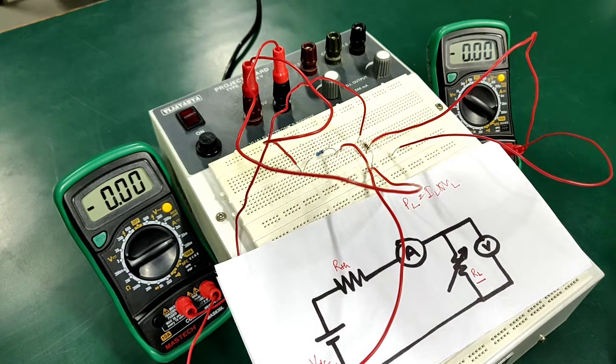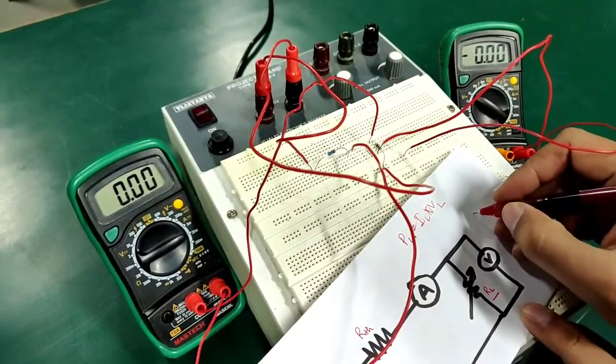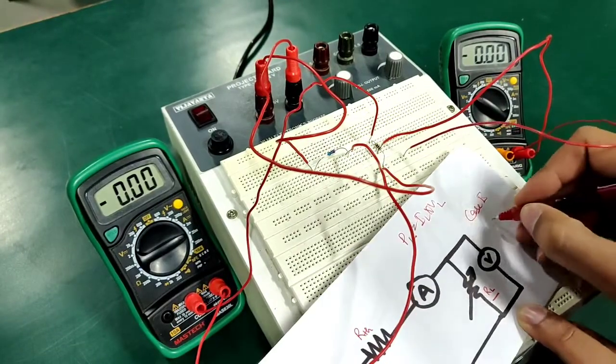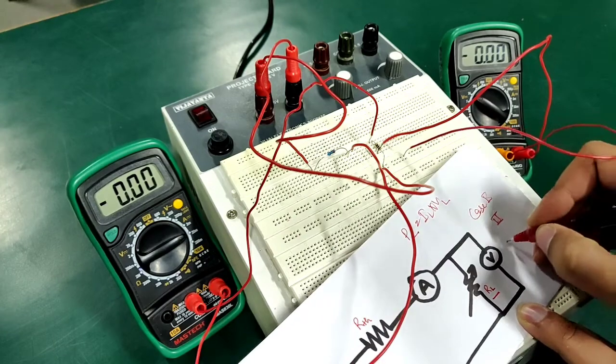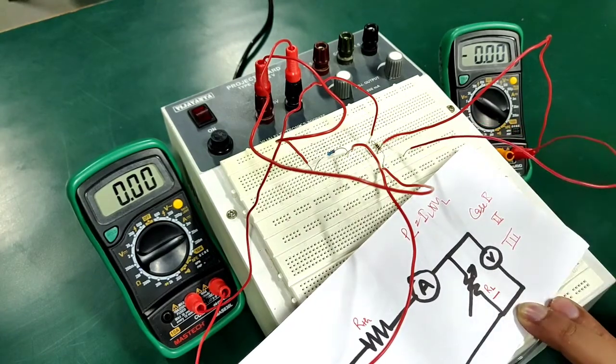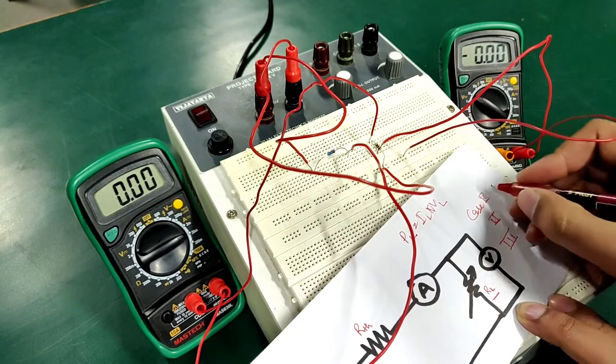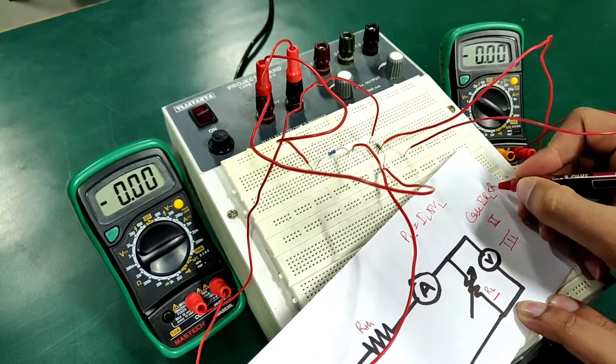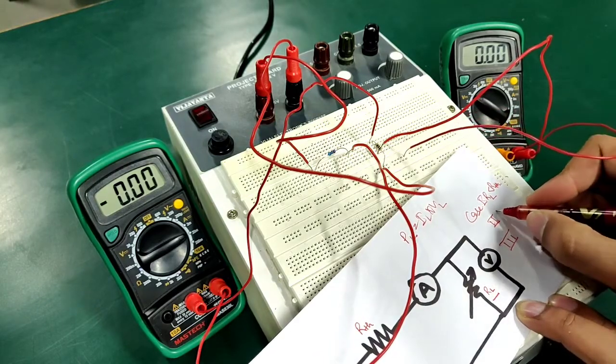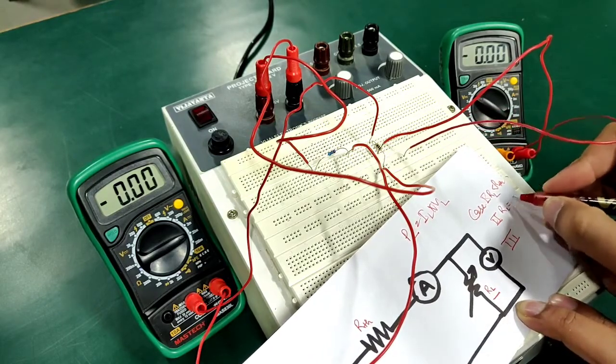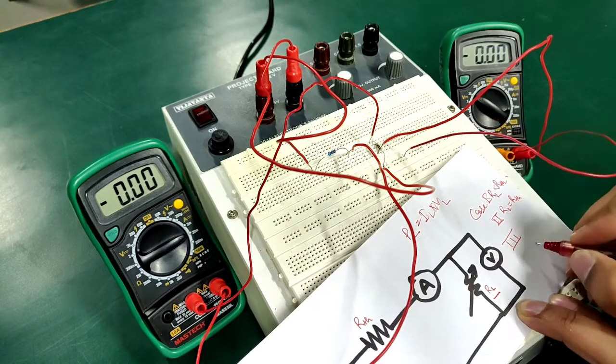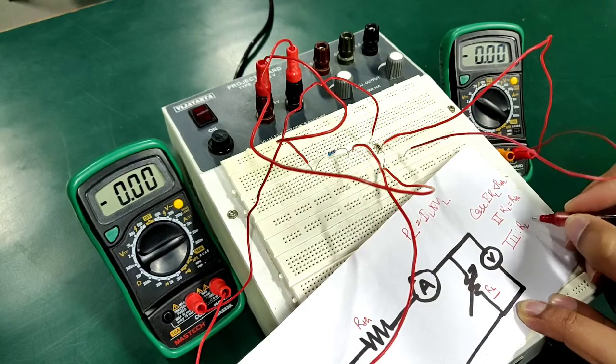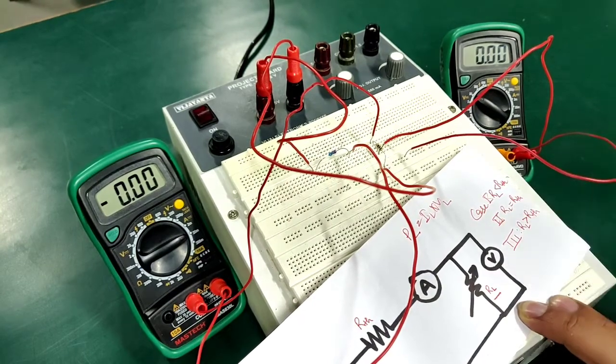As we proceed further into the verification, I am going to take three cases for this: case number one, two and three. In case number one I am going to keep RL less than Rth, in case number two I am going to keep RL equal to Rth, and case number three I am going to keep RL more than Rth.